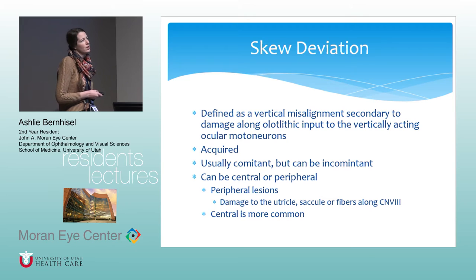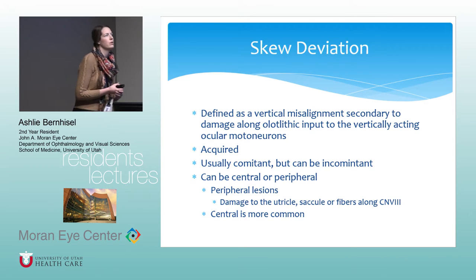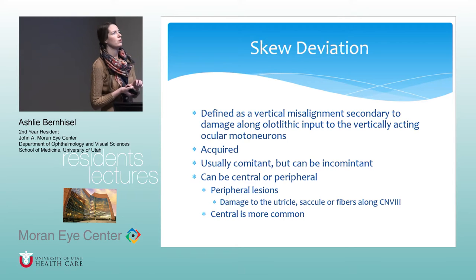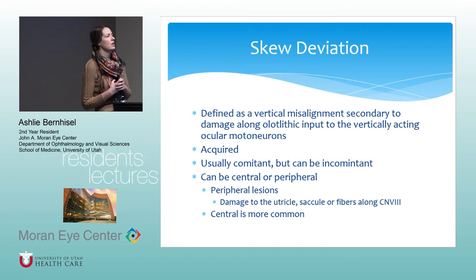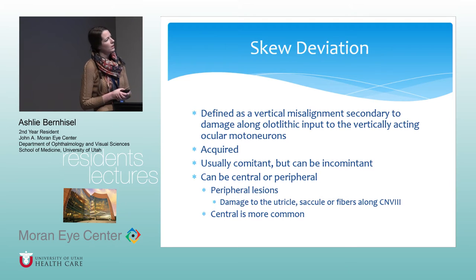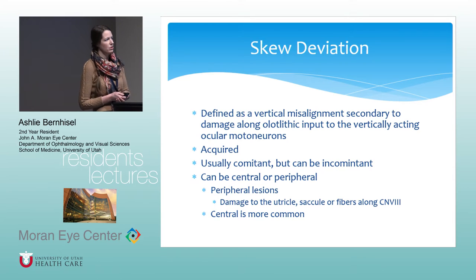Skew deviation is defined as a vertical misalignment secondary to damage along the otolithic input to vertically acting ocular motor neurons. This is acquired and usually comitant, but can be incomitant — comitant means it's the same amount in every gaze, and incomitant is when it changes. It can be central or peripheral; central is much more common, and peripheral is usually caused by damage to the utricle, saccule, or fibers along the eighth nerve.